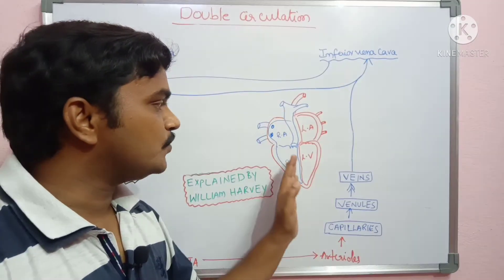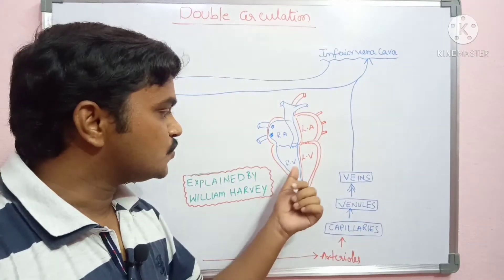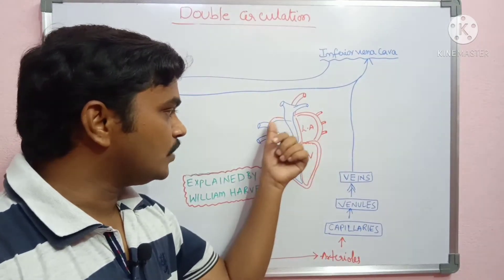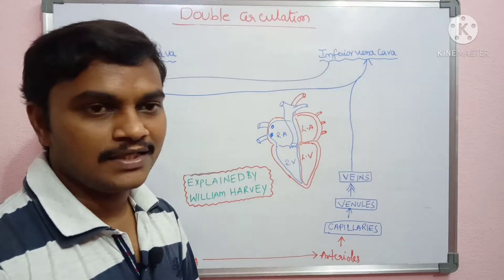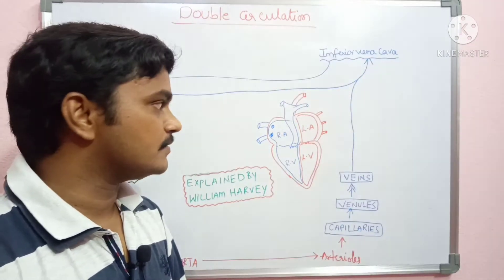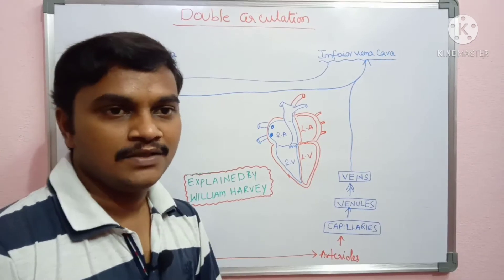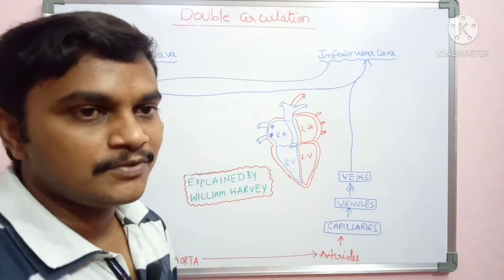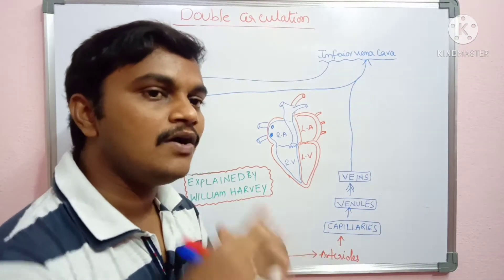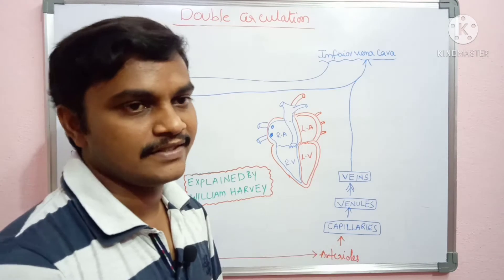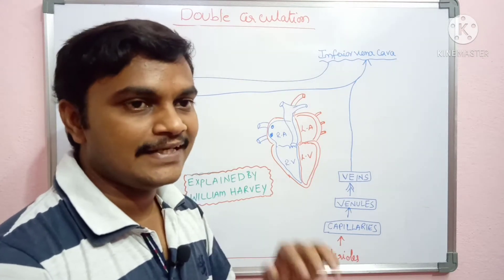This is all about pulmonary circulation. The blue colour represents deoxygenated blood going to the lungs. Once the blood reaches the lungs, it will automatically become oxygenated. So that is the oxygenated blood.